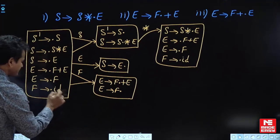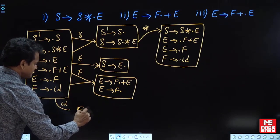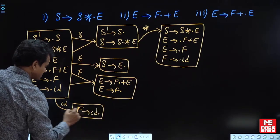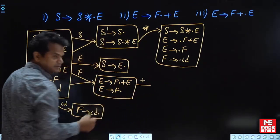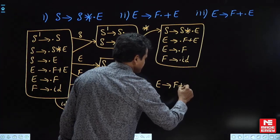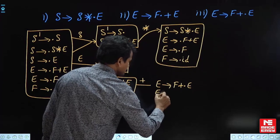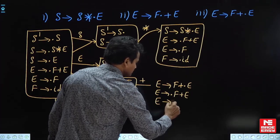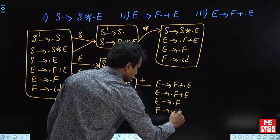Go-to on id gives F→id·. Now if I write the go-to on plus for this production — shift symbol is plus — I write: E→F+·E. Dot of E, add its productions: E→·F+E and E→·F. Dot of F again, add its production F→·id. Close this state.